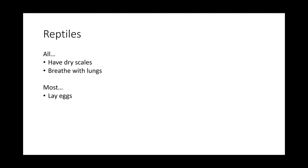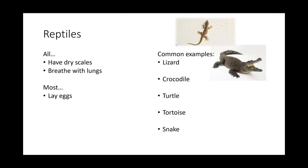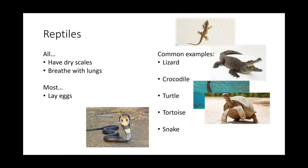Reptiles have dry scales — different from fish scales. They all breathe with lungs. Some reptiles like crocodiles immerse themselves in water but still breathe with lungs. Common examples include lizards, crocodiles, turtles, and tortoises. Turtles and tortoises have a shell, but most of their body is still covered with dry scales, which is why they are classified as reptiles. Snakes also have dry scales that are hard and protect them from injury.